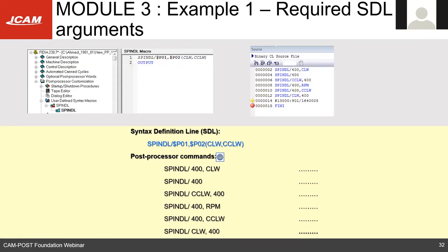Here's a quick example: a spindle command with $P1 catching a number and $P2 catching the minor words clockwise or counterclockwise. Looking at sample CL commands, only two of them will be caught because the order of arguments matters. Even if the right arguments are present, if the order is not respected, the macro will not fire. You can use the F11 key or the step-into button in Jenner to step through and see which commands are being executed.